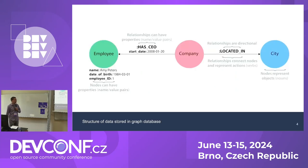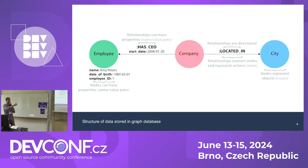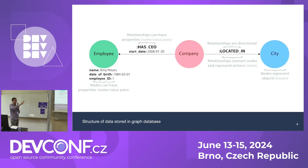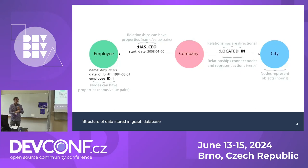How do graph databases store data? The structure is interesting because we have nodes — the circles — and we have relationships or edges, the arrows between them. We can store every piece of information as a node and create as many relationships as we want between them. Every relationship and every node can have any kind of properties we want.